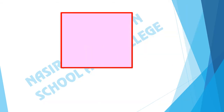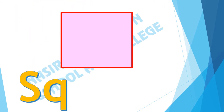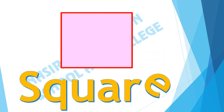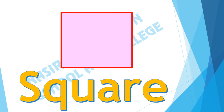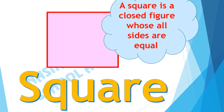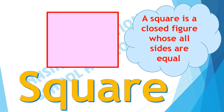S-Q-U-A-R-E. Square. This is square. A square is a closed figure whose all sides are equal. All sides of square are equal. What is it? This is square.